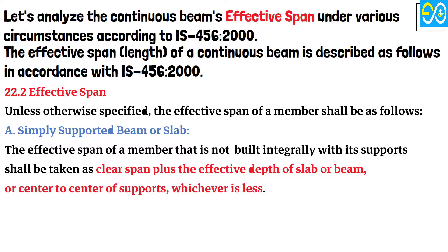A. Simply supported beam or slab: The effective span of a member that is not built integrally with its support shall be taken as the clear span plus the effective depth of the slab or beam, or center to center of supports, whichever is less.